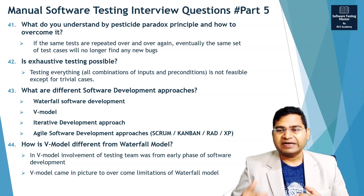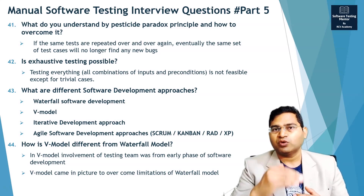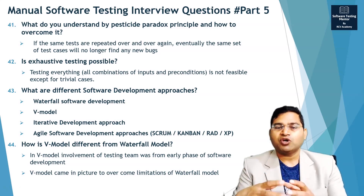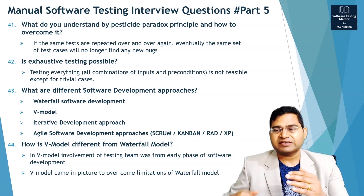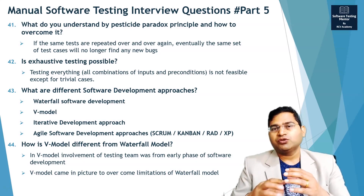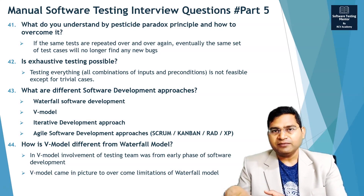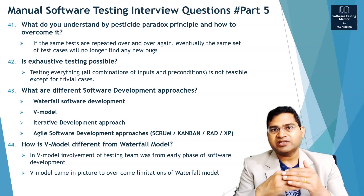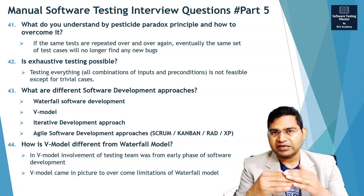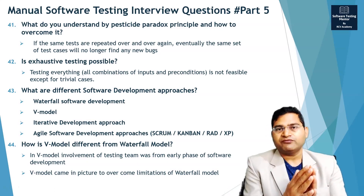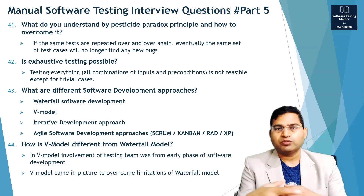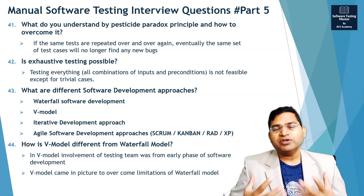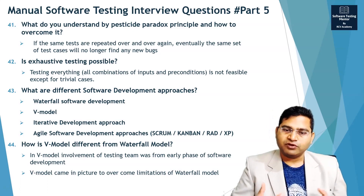In order to overcome that, the V-model came into picture, wherein tester involvement was from the very beginning — from the requirement phase and design phase. The testing team was involved from the early phase of software development, rather than being a siloed team getting the product late in the cycle. They were involved in every phase, writing test cases accordingly and sharing feedback. That's how the V-model solves the limitations of the Waterfall model.